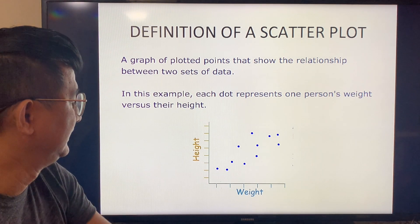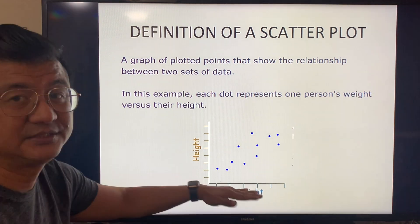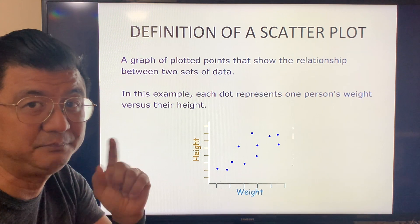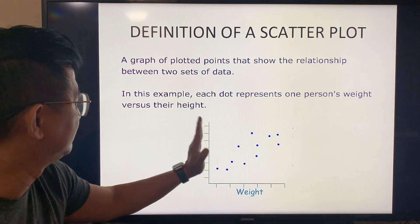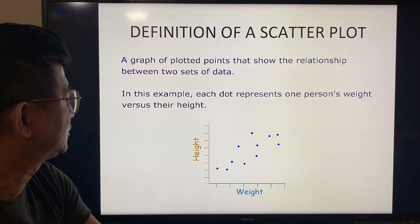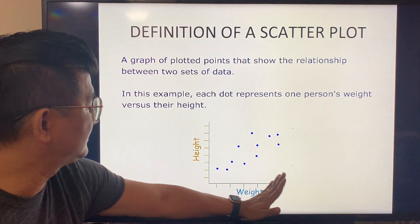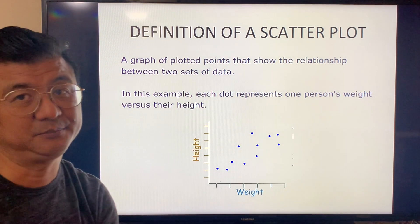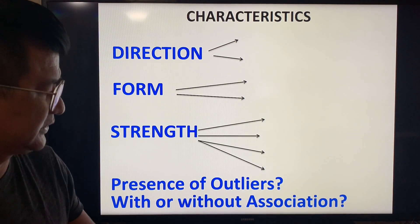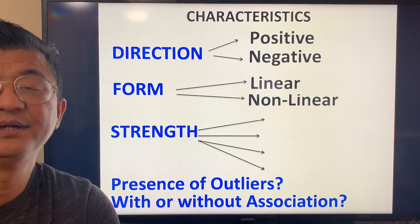A scatter plot is a graph of plotted points that shows the relationship between two sets of data — sometimes called bivariate data because 'bi' means two. For example, weight versus height. Each dot represents one person's weight versus their height — two variables being described and compared.